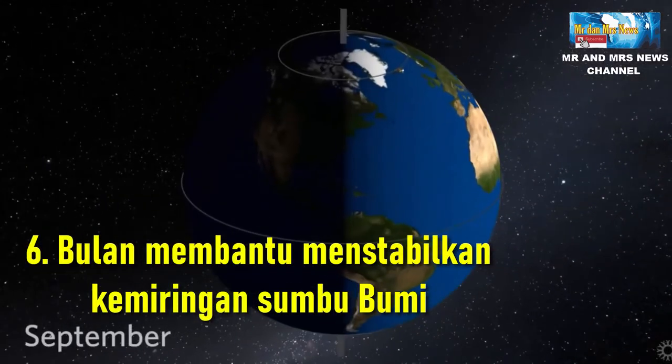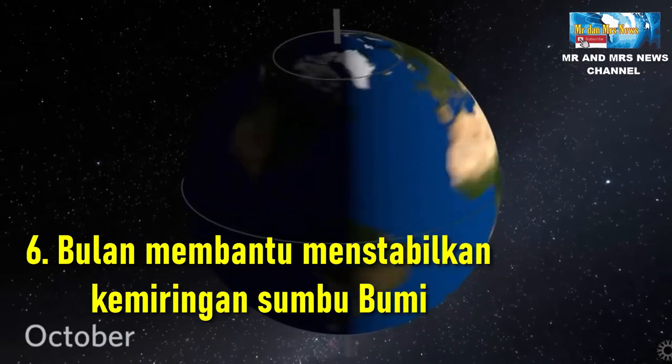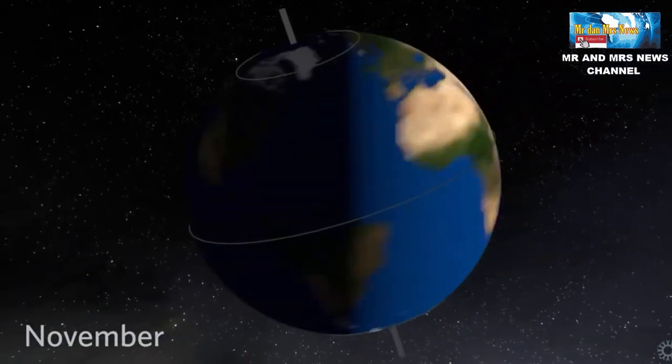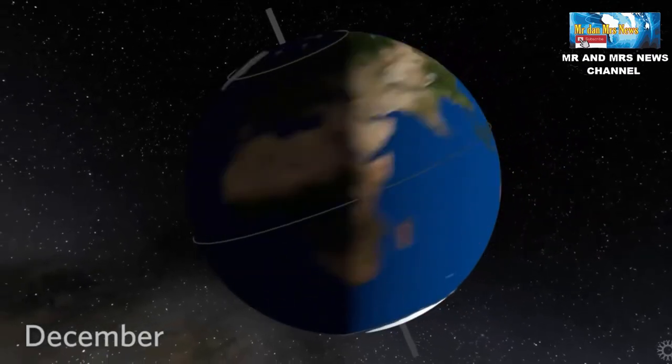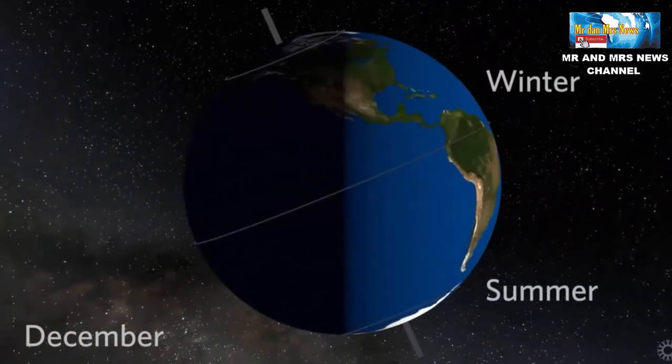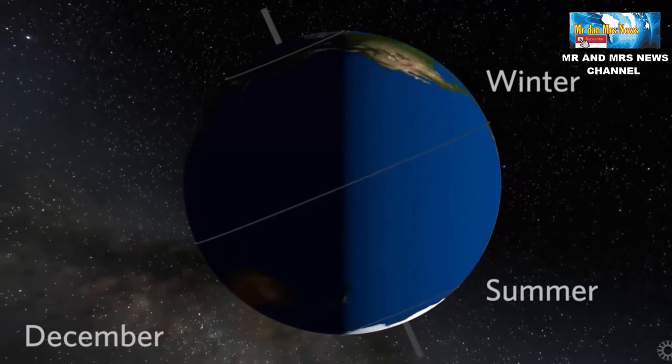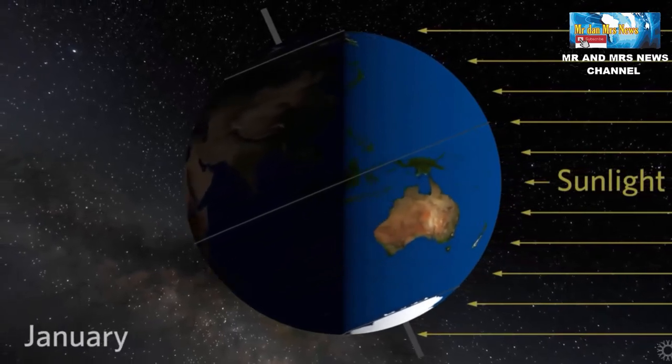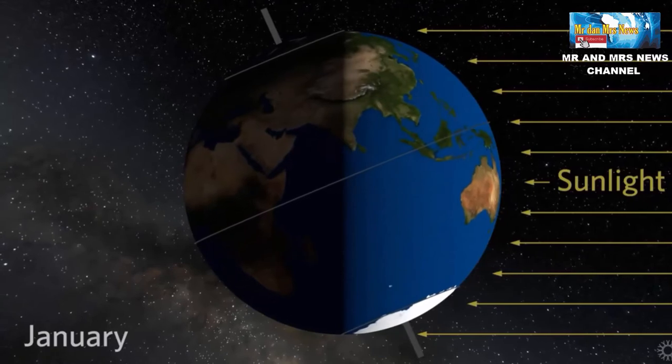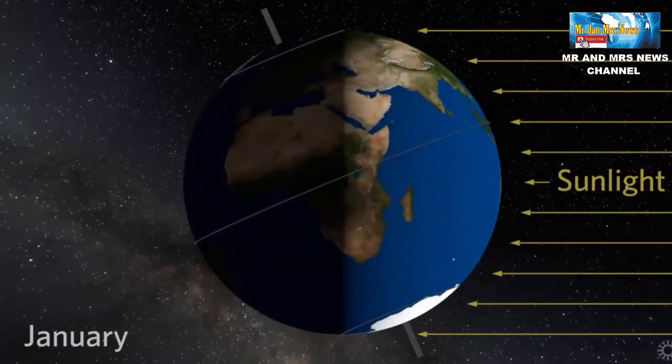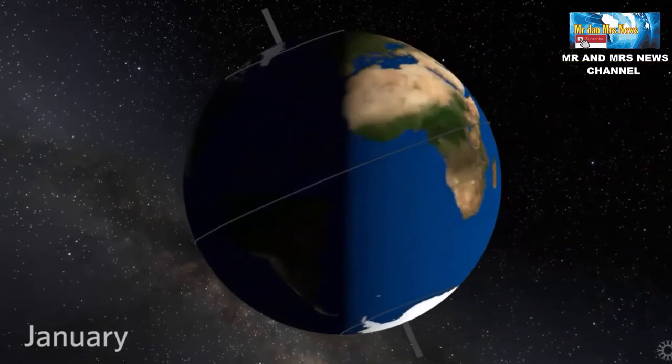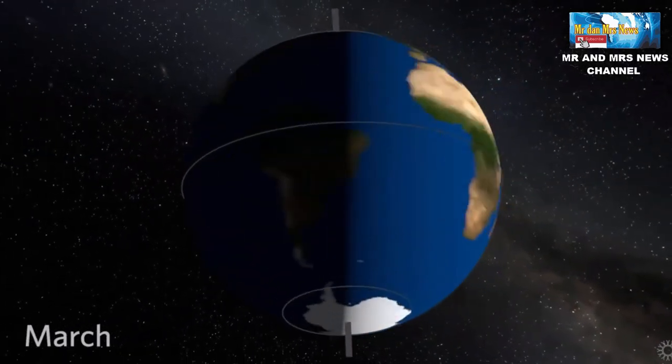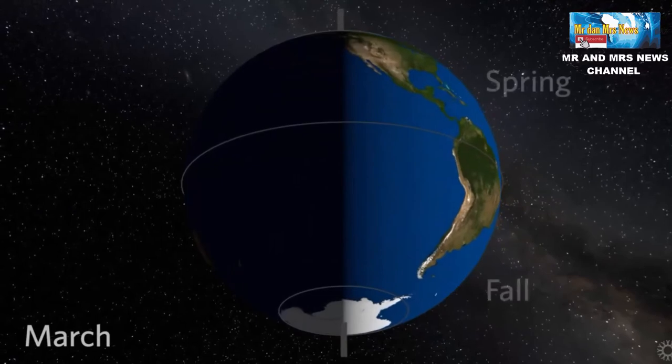Yang keenam, bulan membantu menstabilkan kemiringan sumbu bumi. Kemiringan planet bumi adalah 23,4 derajat dengan sedikit fluktuasi antara 22,1 derajat sampai 24,5 derajat. Tanpa bulan yang membantu menstabilkan planet bumi, fluktuasi kemiringan sumbu bumi bisa menjadi lebih besar mencapai 45 derajat, yang artinya planet bumi akan berputar di sisinya seperti Uranus. Kemiringan ekstrim ini akan berdampak signifikan pada kehidupan di bumi karena menyebabkan perubahan besar pada iklim bumi. Setiap setengah wilayah planet bumi akan mengalami 6 bulan siang dan 6 bulan malam.